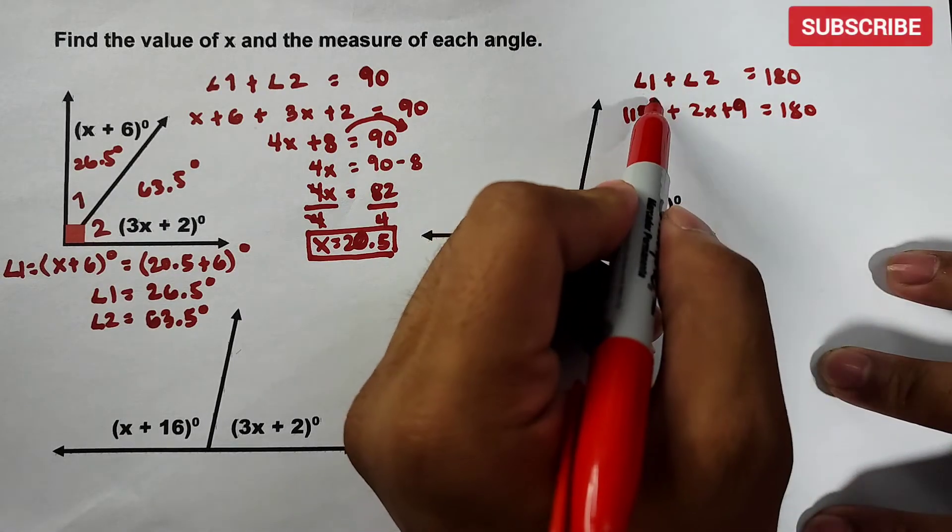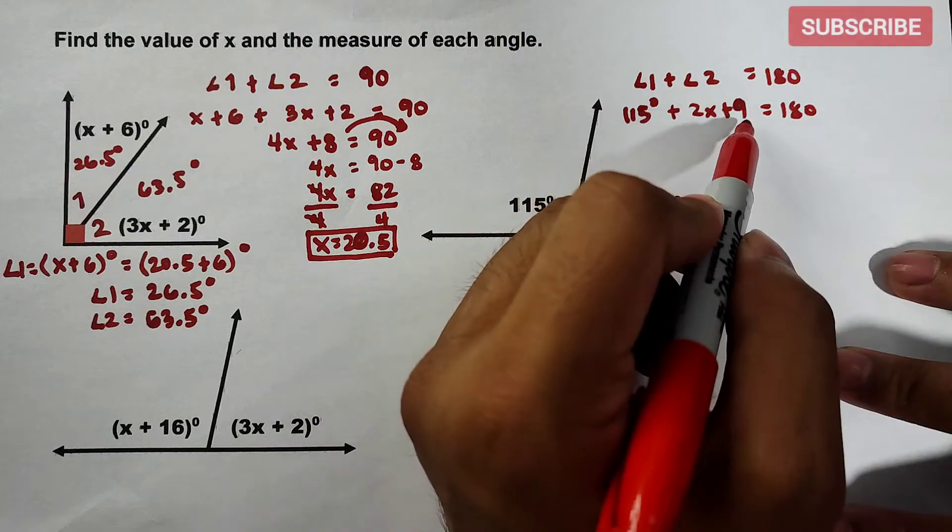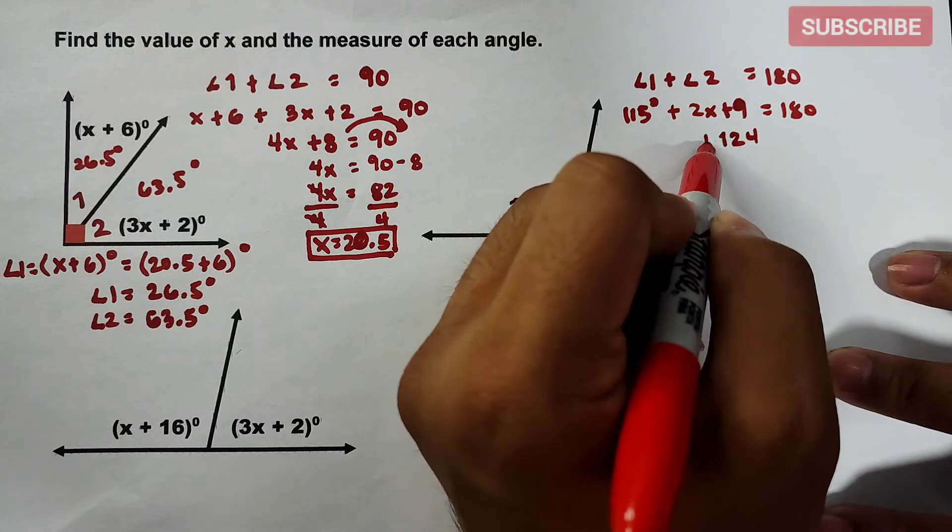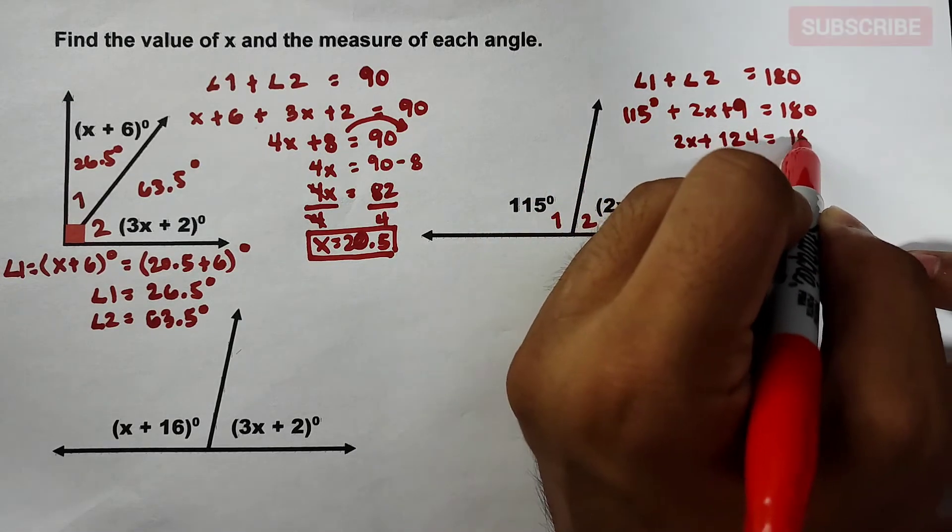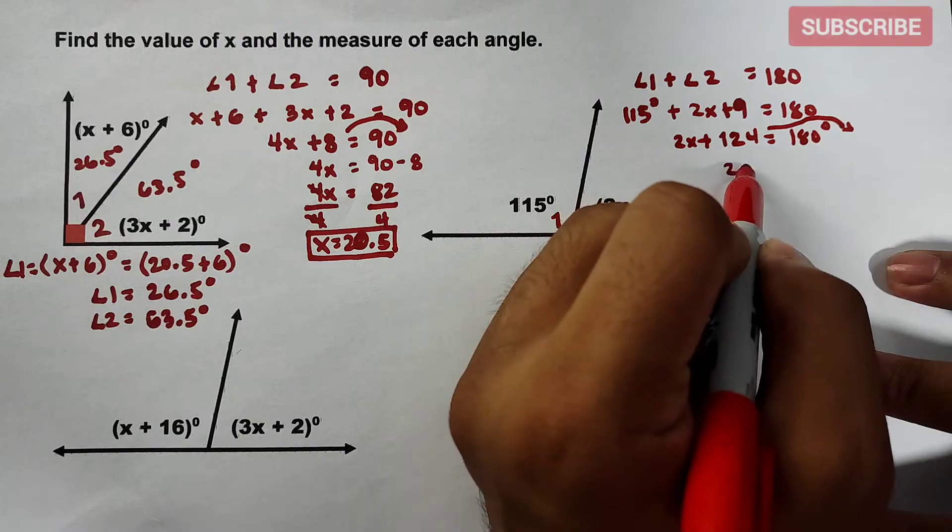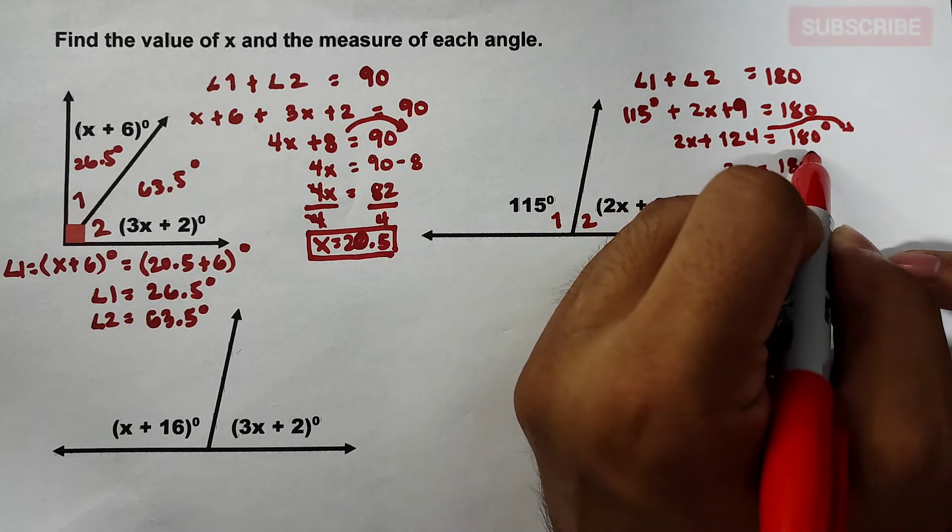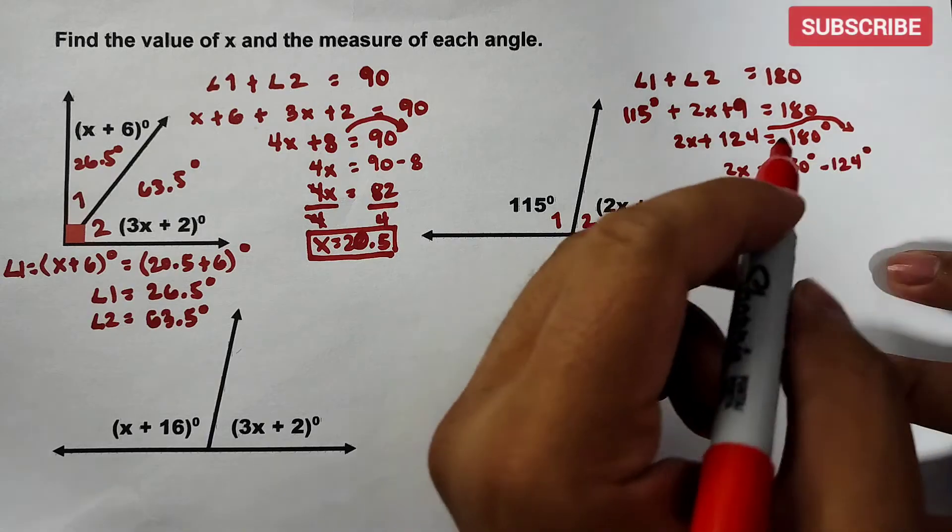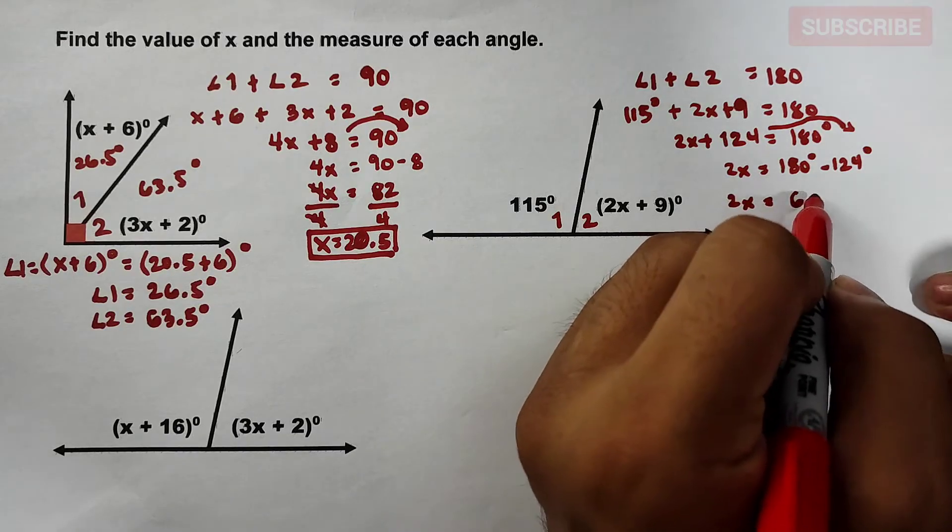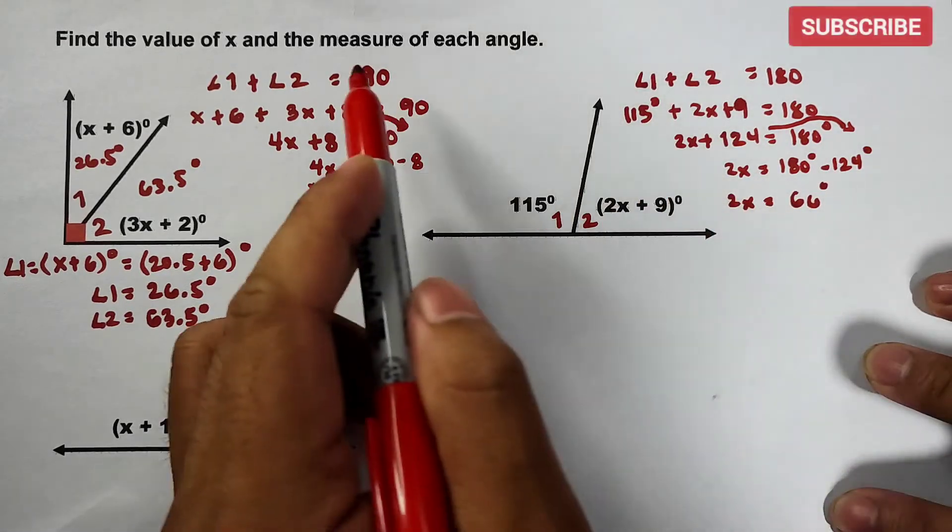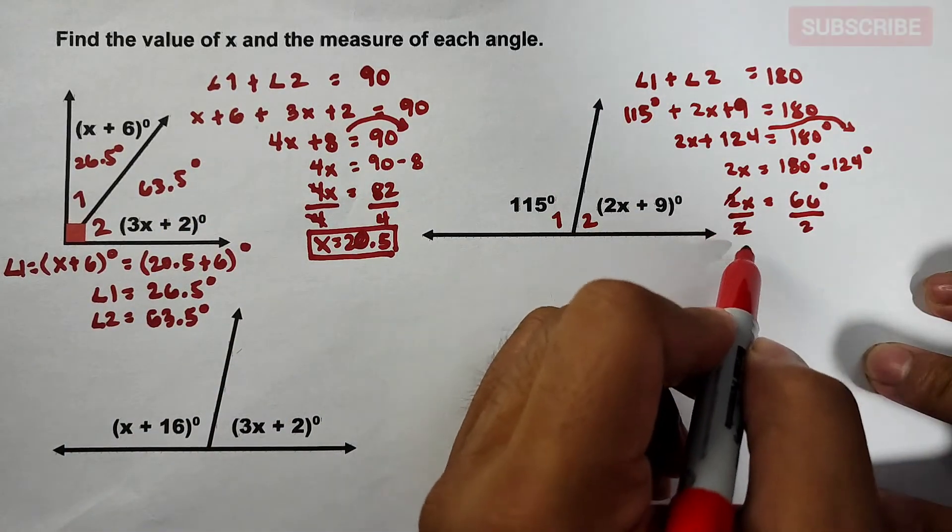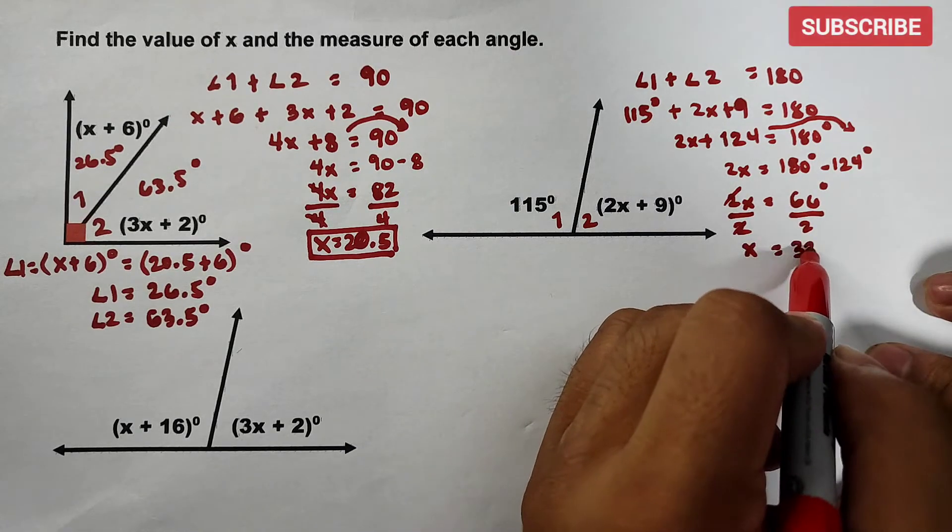115 plus 9 that is equal to 124 plus 2x is equal to 180 degrees. Transpose 124 to the other side. It will become 2x is equal to 180 degrees minus 124 degrees. So this is 2x is equal to 66 degrees. To solve for x, divide by 2, divide by 2, cancel, cancel. Your x is equal to 33 degrees.